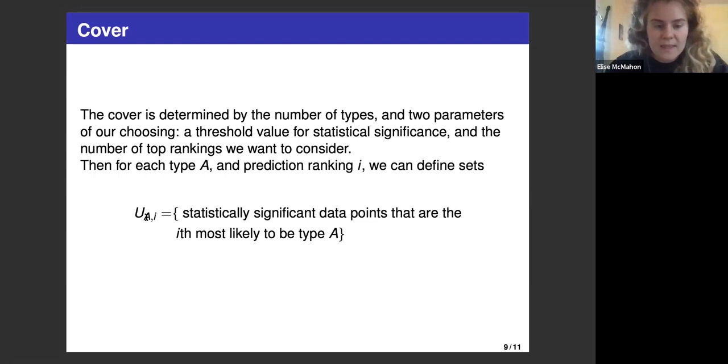We'll have one open set for each of these. If I have a type A and a prediction ranking i, the set would be denoted by U_A,i, and it would contain all of the statistically significant data points that are the ith most likely to be type A. By statistically significant, we mean that its probability is above that threshold value that we chose. For example, if I was taking U_birch,1, I would be taking all of the statistically significant data points that are the most likely to be birch.